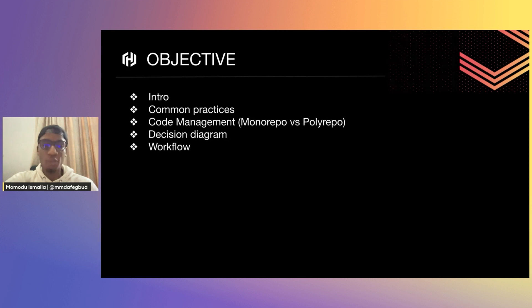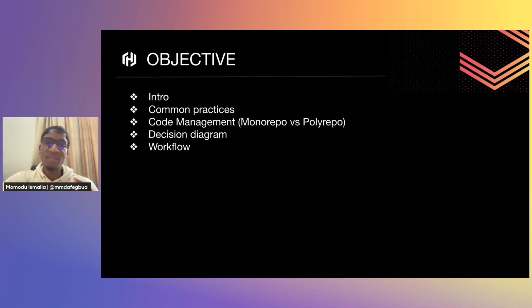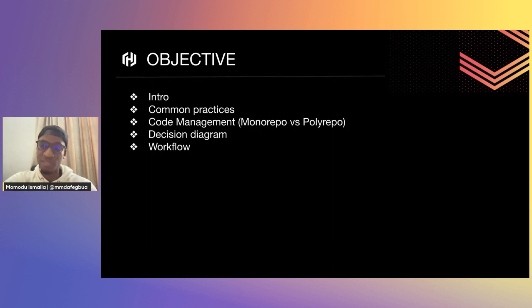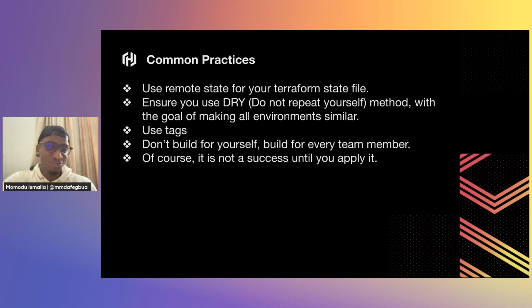I'm going to talk about code management — monorepo versus polyrepo or multi-repo. Then we're going to go through a decision diagram where I walk you through different considerations when you want to implement CI/CD for your Terraform IaC code. And if there is time, we'll talk about different Git workflows generally.